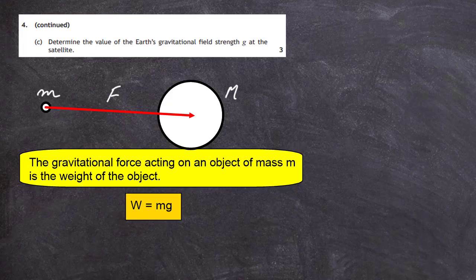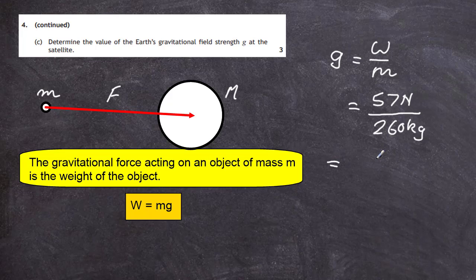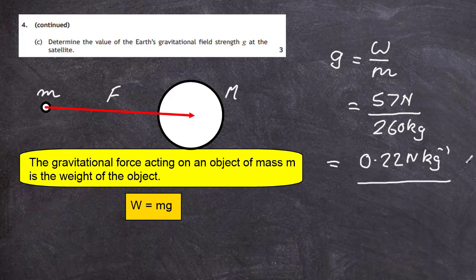We know that weight W equals mass times gravitational field strength: W = mg. Rearranging, g = W/m. The gravitational force of attraction, which is the weight, was 57 newtons. Dividing by the mass of the satellite, 260 kg, gives 57 ÷ 260 = 0.22 newtons per kilogram. So that's the gravitational field strength out at the satellite.